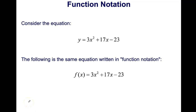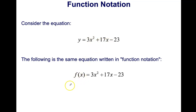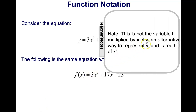Now let's learn about function notation. Consider y equals 3x squared plus 17x minus 23 — the following is the same equation written in function notation. Instead of writing y, we write f of x, so f of x equals 3x squared plus 17x minus 23. Keep in mind that f of x is not the variable f multiplied by x — it is an alternative way of representing y, read as f of x.